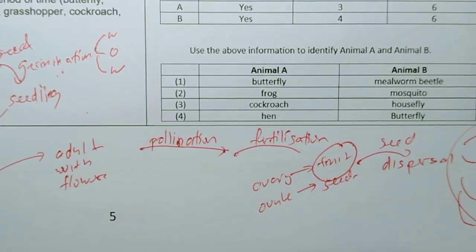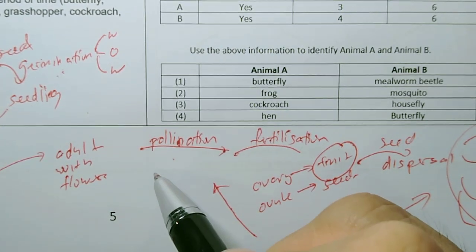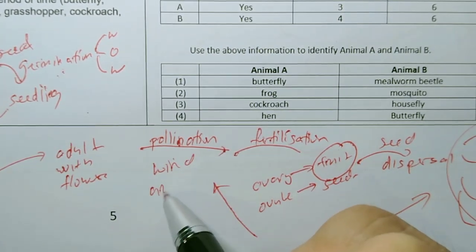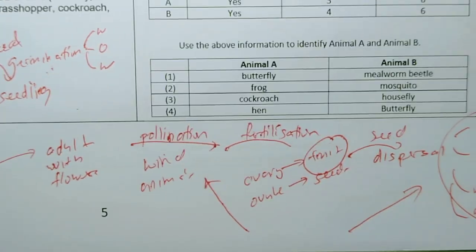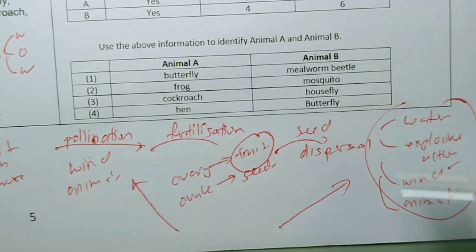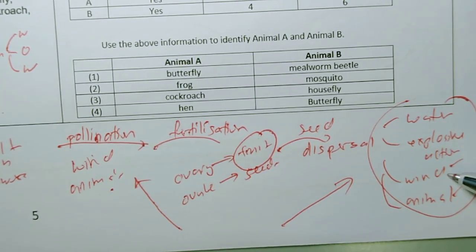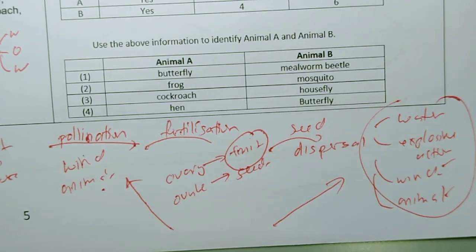One thing I notice when I mark my students' work is they are confused between seed dispersal and pollination. Because here they talk about pollination by wind or by animals, and they confuse with this part about wind and animal. Don't be confused. Pollination is about moving pollen grains. Dispersal is about moving seeds.